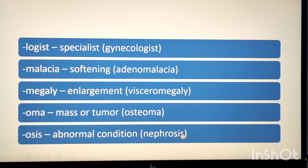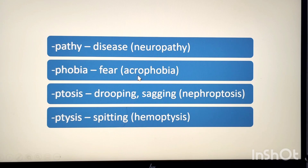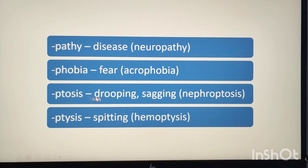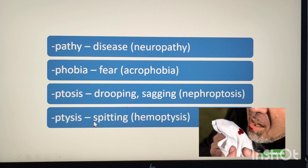The suffix -osis means abnormal condition. Example: nephrosis. Nephro means kidney, so nephrosis means abnormal condition of the kidney. The suffix -pathy means disease. Example: neuropathy, meaning disease of the nerves.